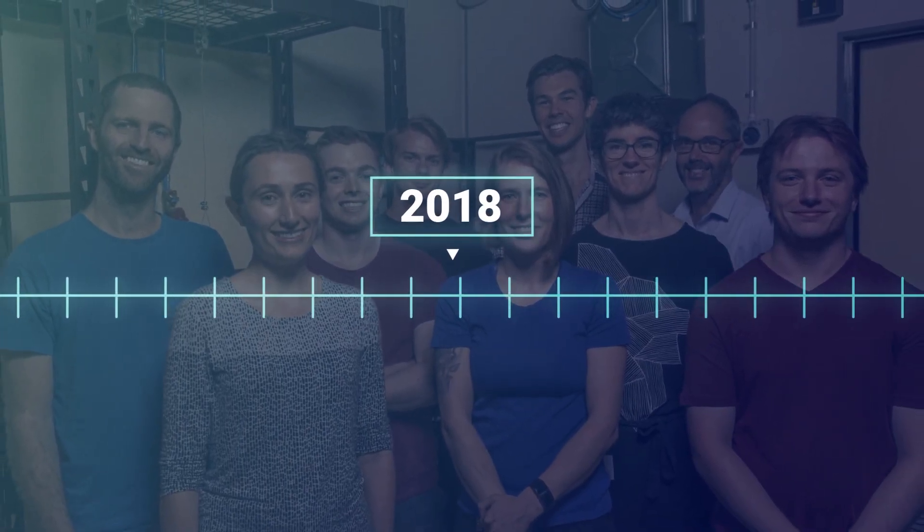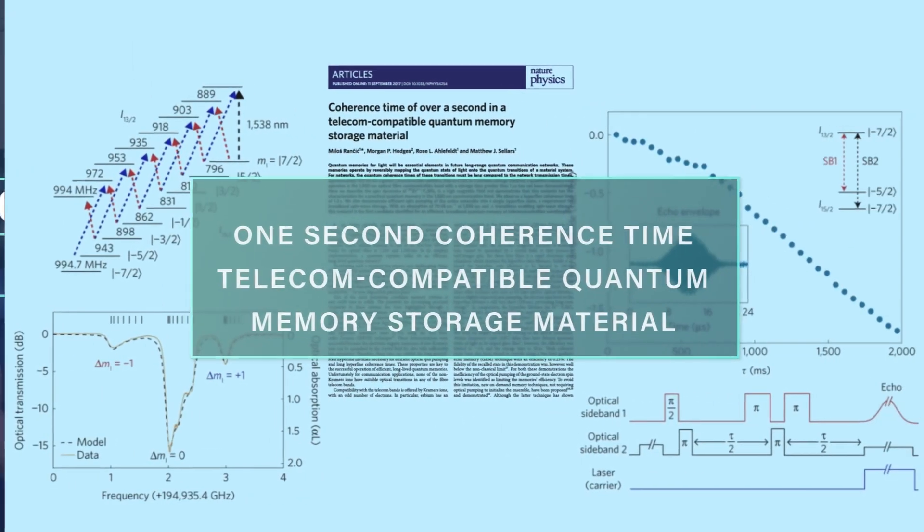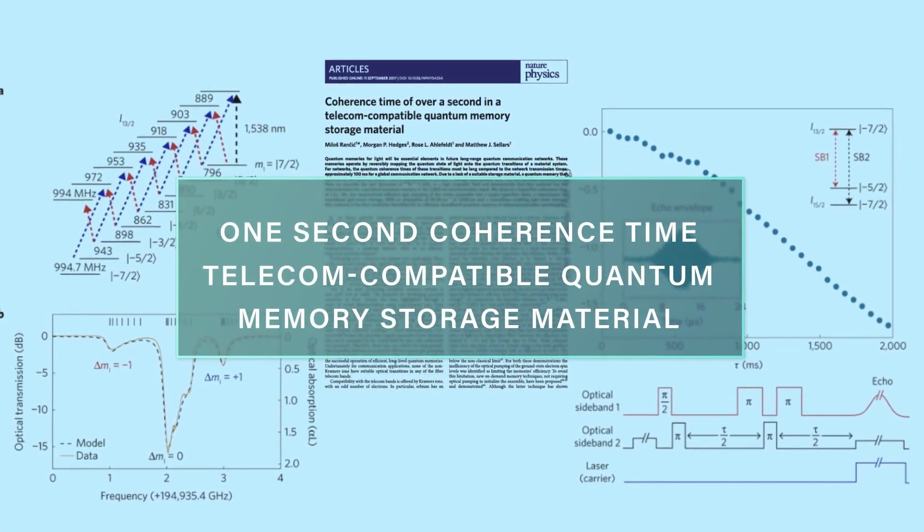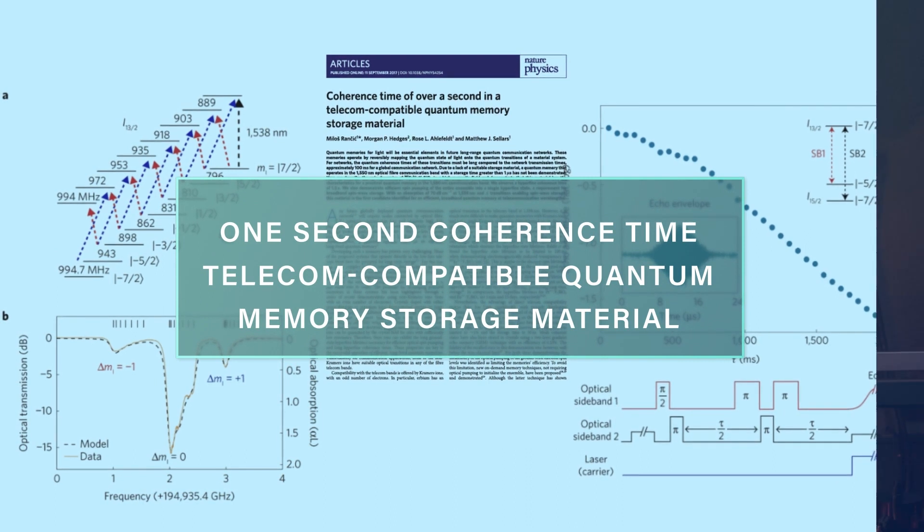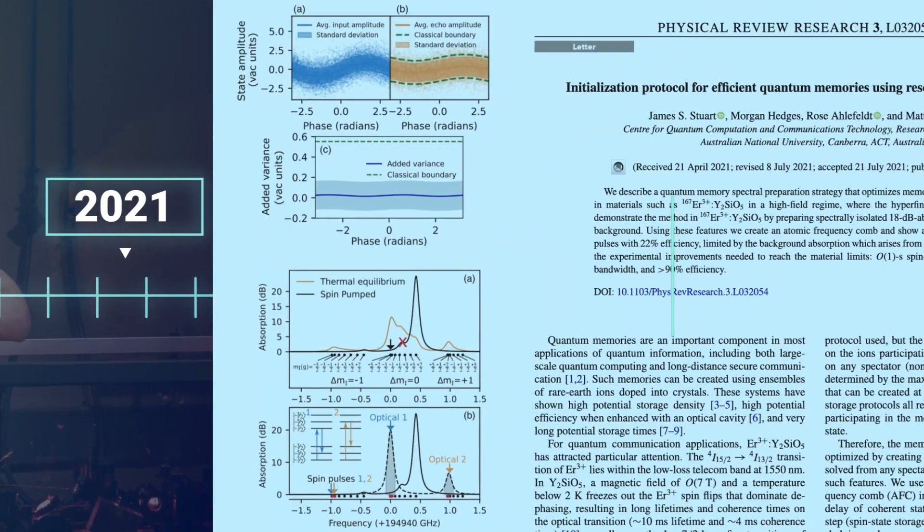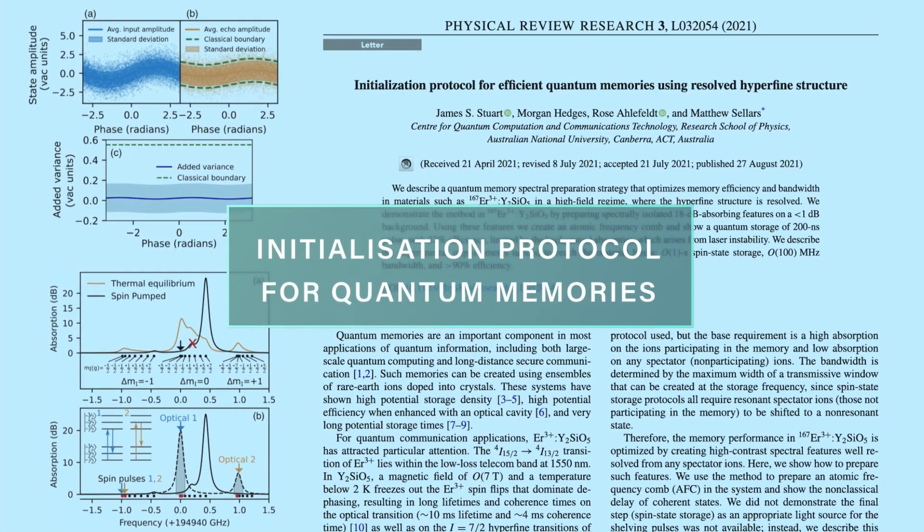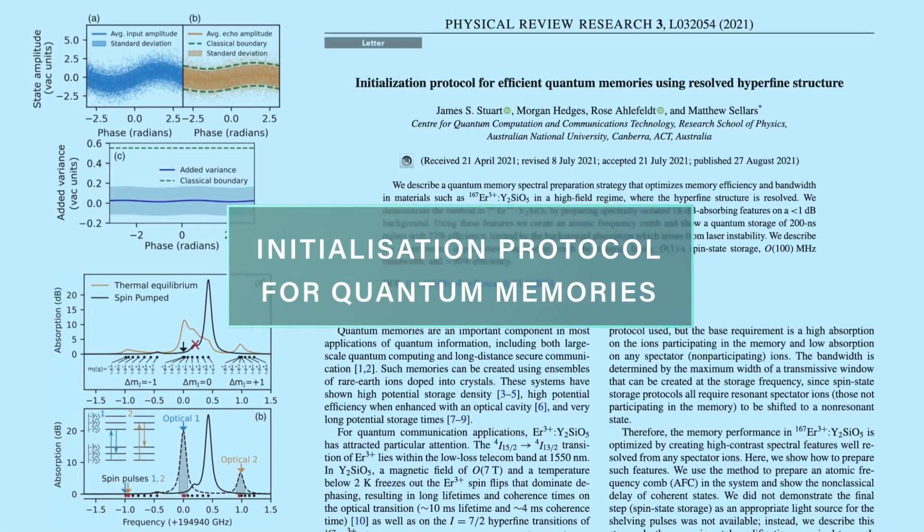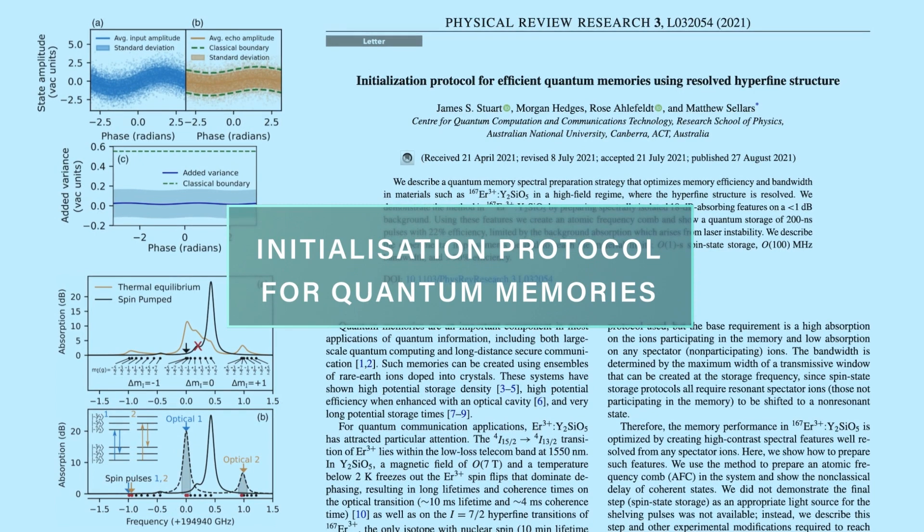As we're now working towards long-distance quantum communication, Erbium is becoming a key element for us because it's the only element that interacts with light at the telecom wavelength. We established the operating conditions required to make an Erbium-doped crystal suitable for a high-performance quantum memory. Since then, we've been optimizing the storage time, bandwidth and efficiency of the memory. With these improvements, we're now set up to demonstrate initial quantum repeater operations.